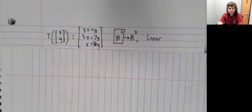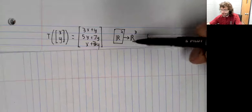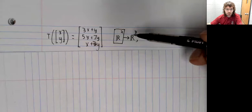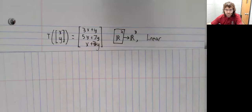Let's do an example where we decide whether a linear transformation is one-to-one and or onto. Here is a linear transformation from R² to R³. It might not be immediately obvious